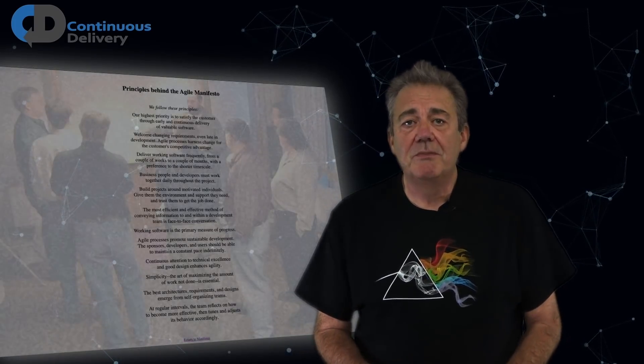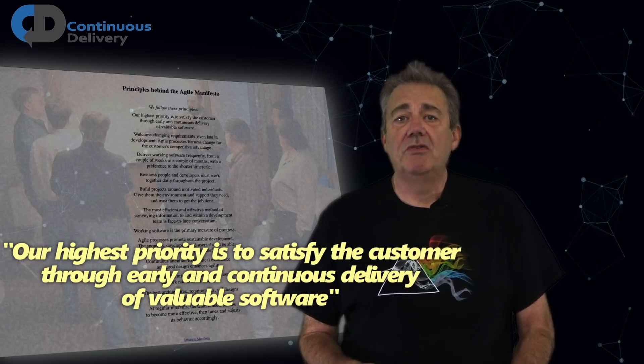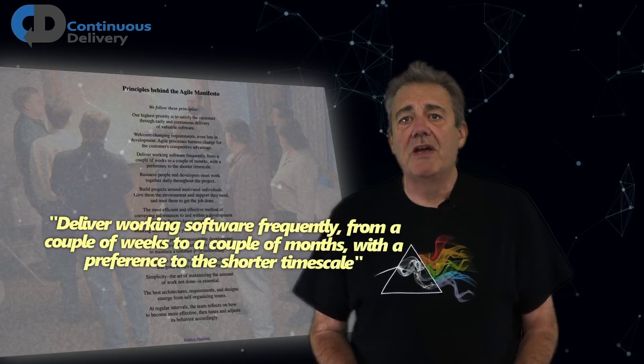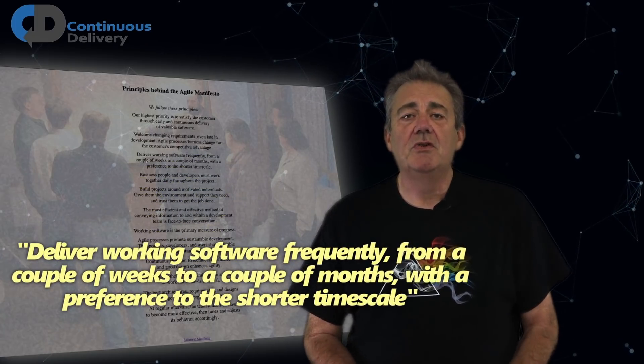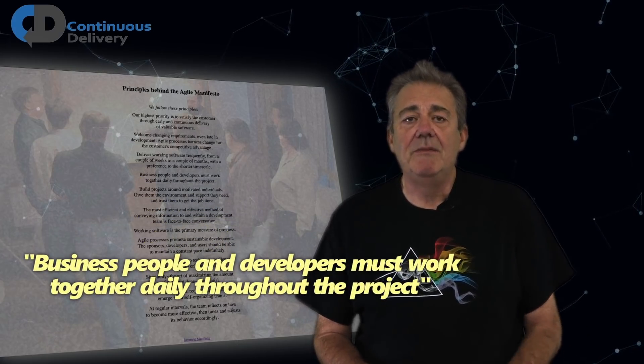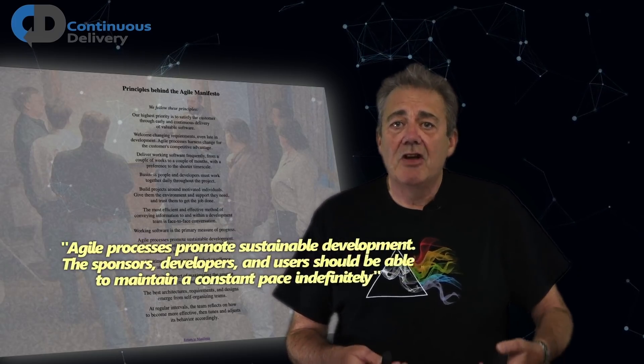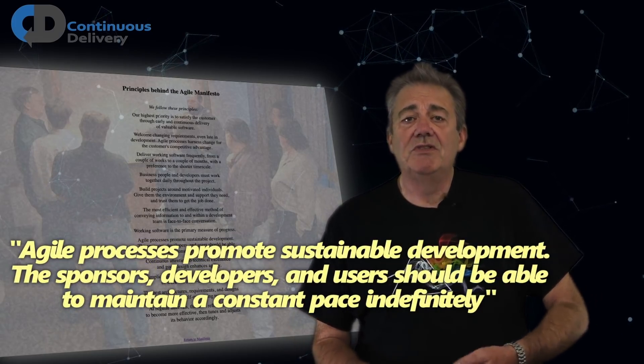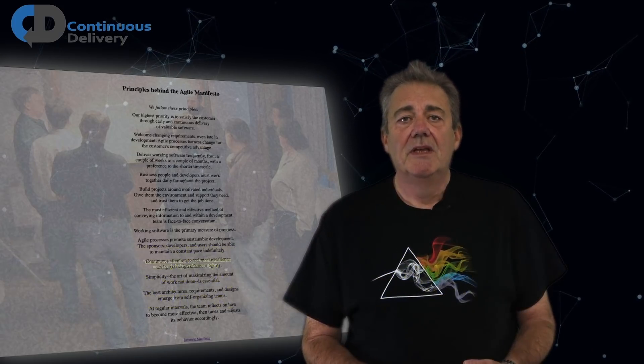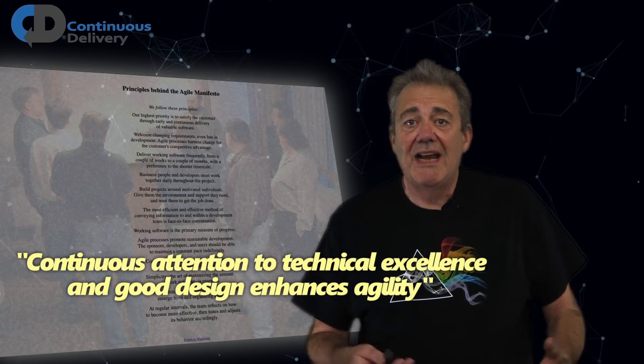Then there are 12 principles. Our highest priority is to satisfy the customer through the early and continuous delivery of valuable software. Deliver working software frequently with a preference for shorter timescales. Business people and developers working closely together on a daily basis. Working software is the primary measure of progress. Agile processes promote sustainable development, so everyone should be able to maintain a constant pace indefinitely. Continuous attention to technical excellence and good design enhances agility.